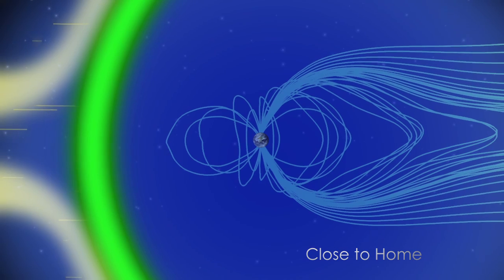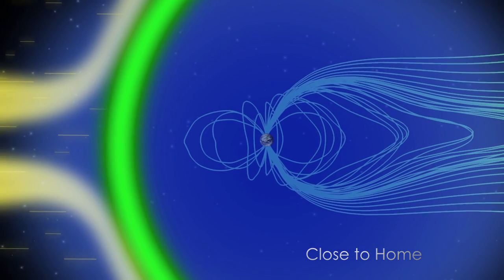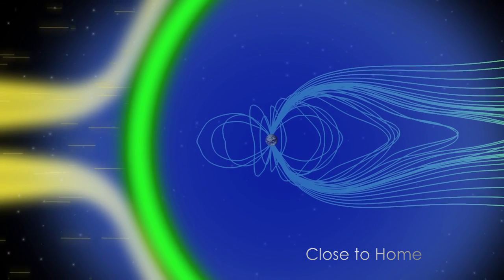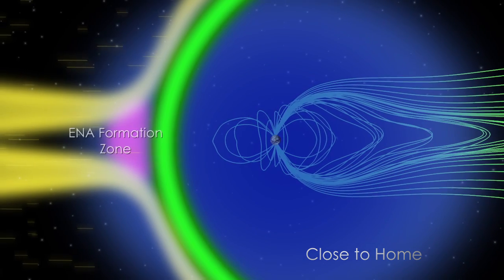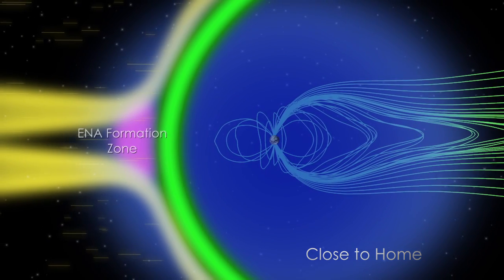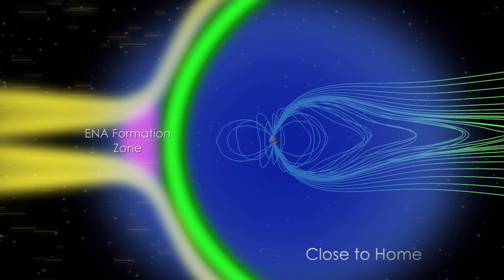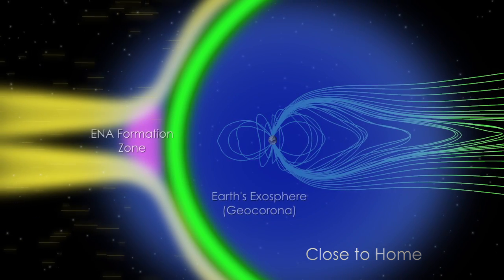Because IBEX is orbiting Earth, it also can observe the creation of energetic neutral atoms along the nose of Earth's magnetosphere. ENAs are created there as solar wind protons take electrons from hydrogen atoms in the outermost vestiges of our atmosphere, known as the exosphere.